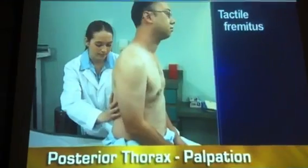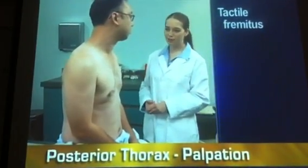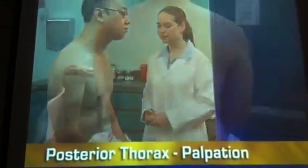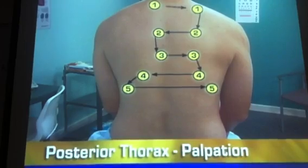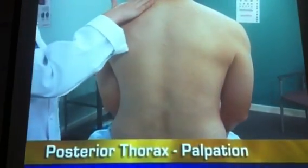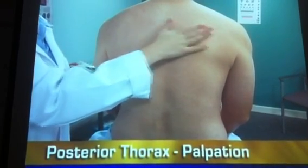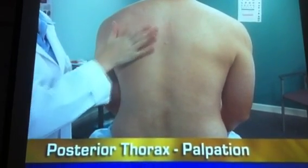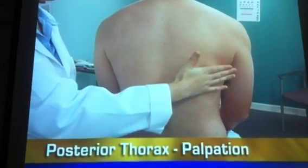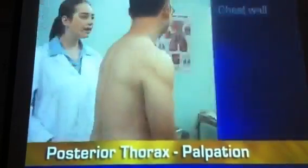Next, palpate for tactile fremitus using the ball of your hand, while the person repeats a resonant phrase such as '99' or 'blue moon.' Following a consistent pattern, palpate systematically beginning over the lung apices. Move from one side to the other and down, avoiding the scapula. Vibrations should feel the same in corresponding areas on each side; however, they may feel stronger on the right side between the scapula, because that side is closer to the tracheal bifurcation.